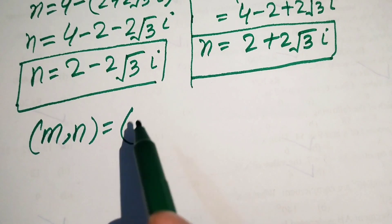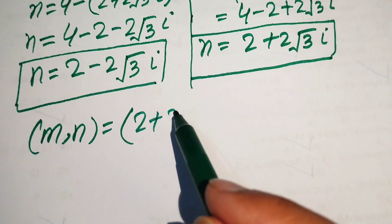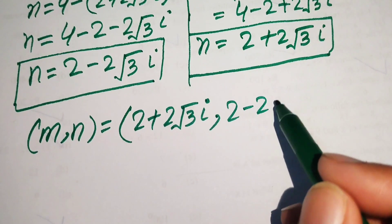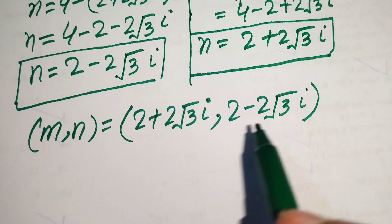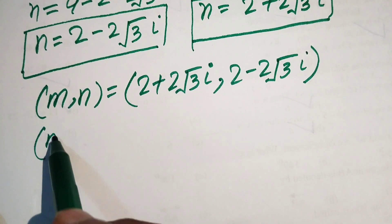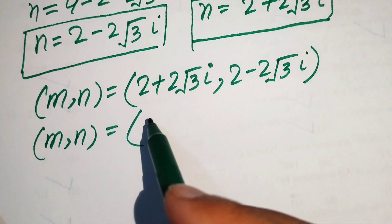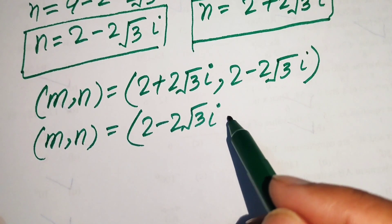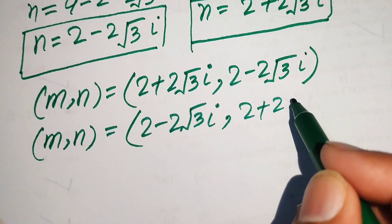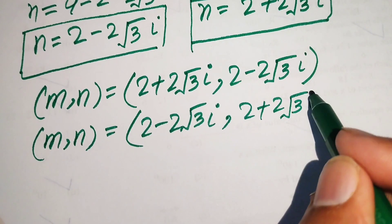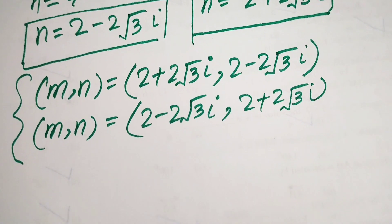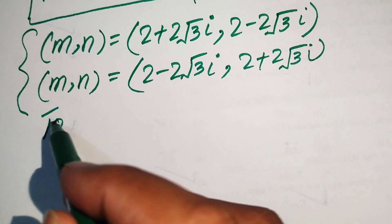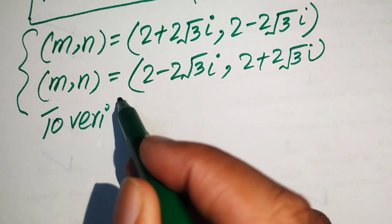We now have two solution pairs. The first solution is: m equals 2 plus 2 square root of 3 iota and n equals 2 minus 2 square root of 3 iota. The second solution is: m equals 2 minus 2 square root of 3 iota and n equals 2 plus 2 square root of 3 iota.